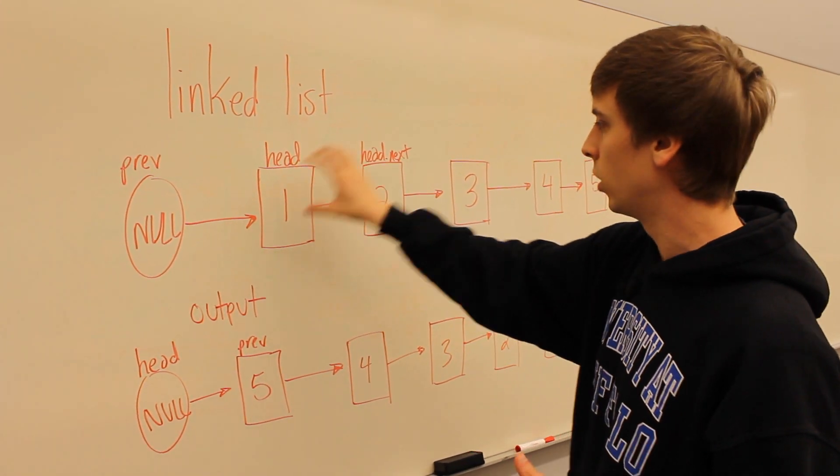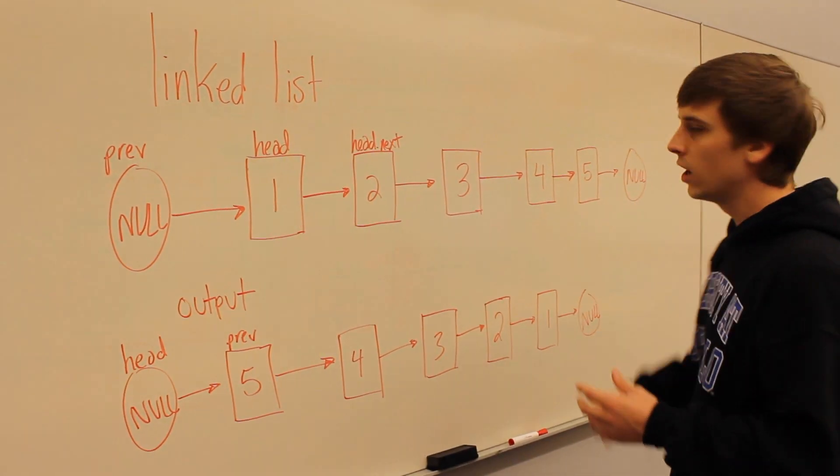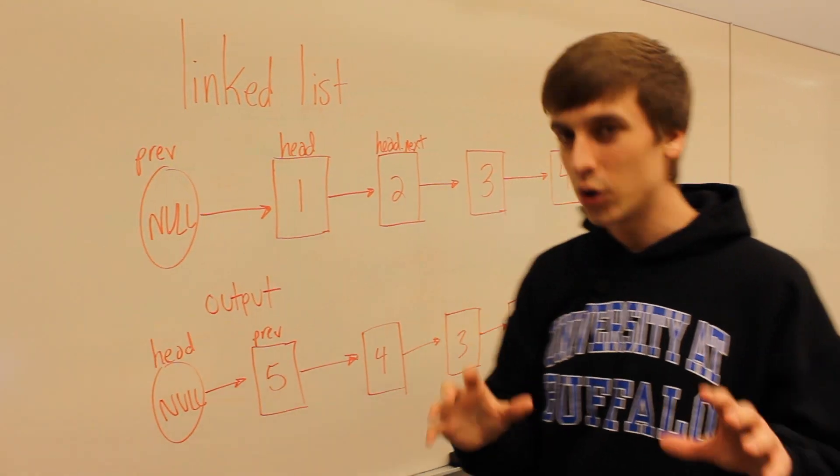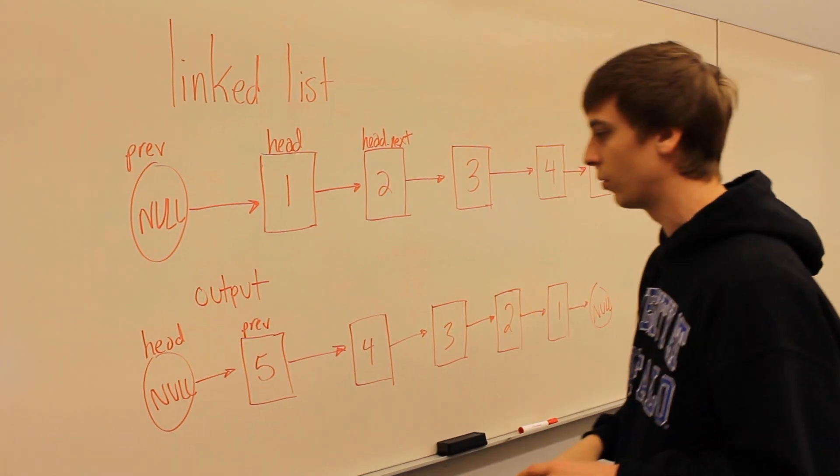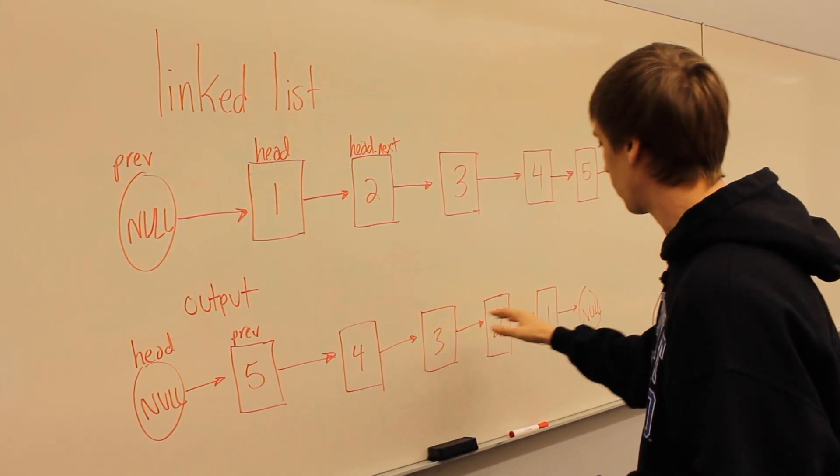Each one of these little blocks is a node, so it looks like our list right now is one, two, three, four, five. So what we're going to want to do is reverse this list. By the time we're done with this algorithm, we want it to look like this output right here where it's five, four, three, two, one.